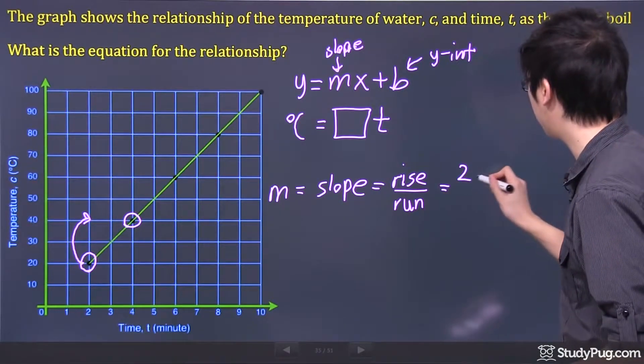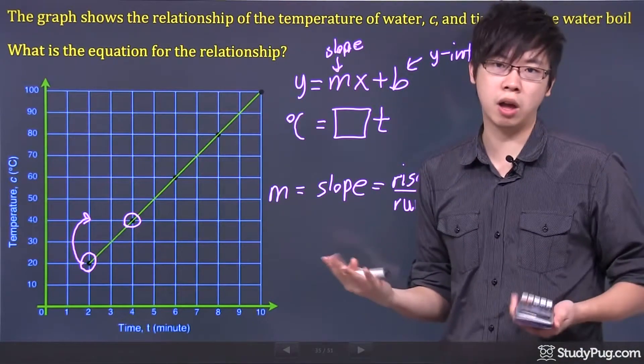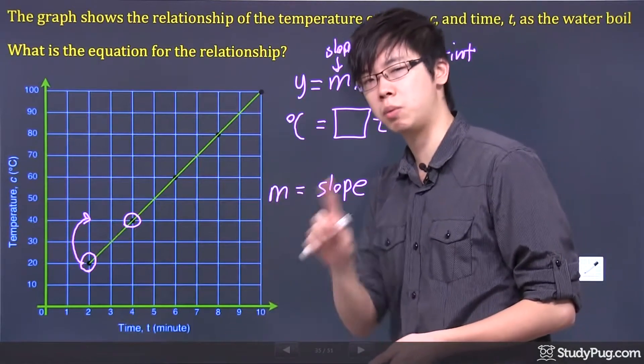So the rise, in this case, will be 20, and it's positive. Why? Because you're going up. If you're going down, it will be negative.